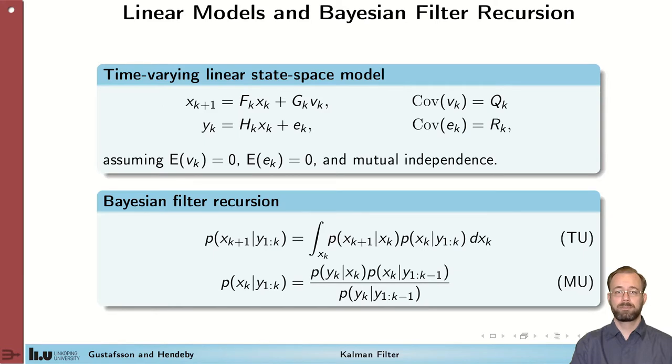The Kalman filter applies to linear state-based models. One is shown here. The next state is a linear combination of the current state plus some process noise. The measurements that we expect, that's a linear combination of the current state plus some measurement noise.